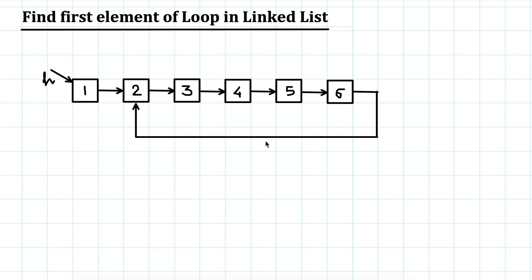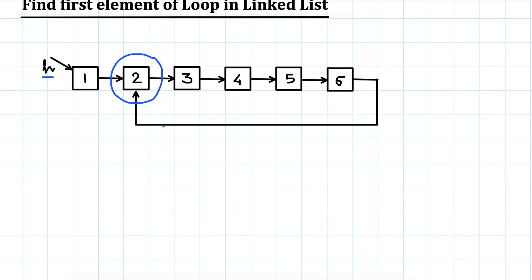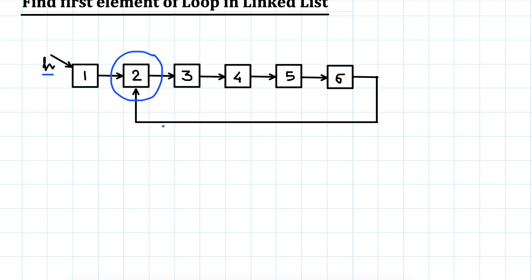In earlier videos we had seen how to find a loop in a linked list. One of the algorithms we used was Floyd's loop detection algorithm to find if a loop exists or not. In this video we will go one step ahead and find what is the starting of the loop, or the first element of the loop. We will use Floyd's loop detection algorithm again, just modified a little bit.